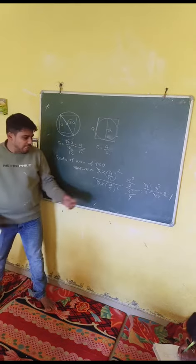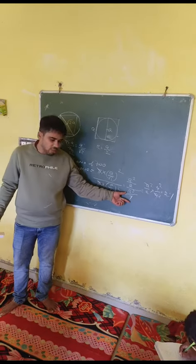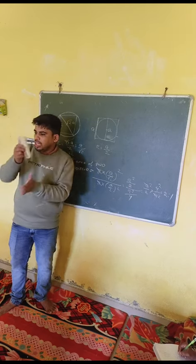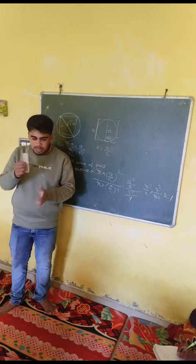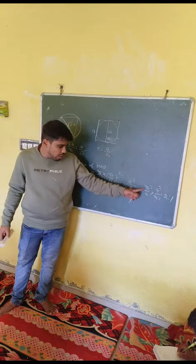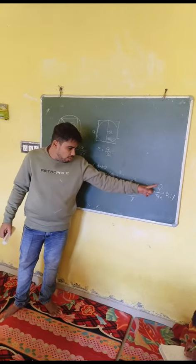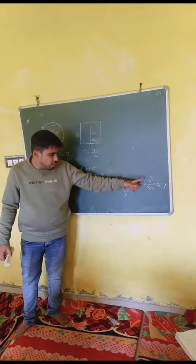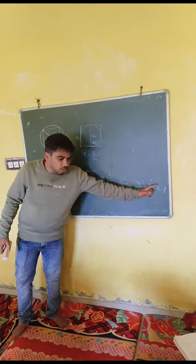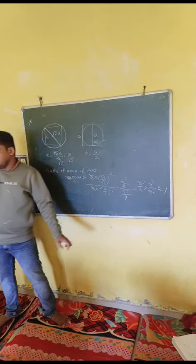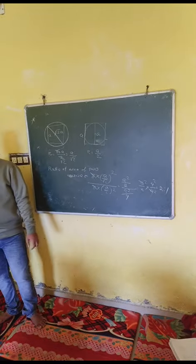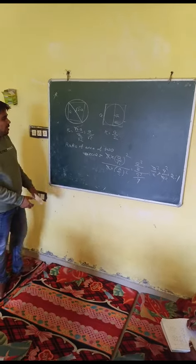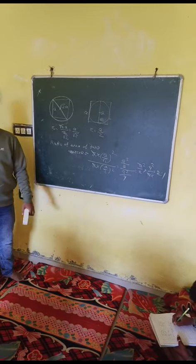When you have a fraction, multiply to get the ratio. So S squared by 2 into 4 by S squared — S squared and square cancel — giving 2 to 1. The ratio of the areas is 2 to 1.